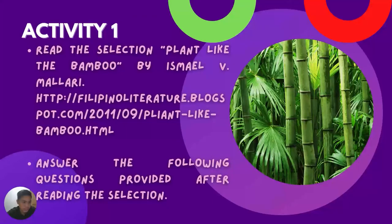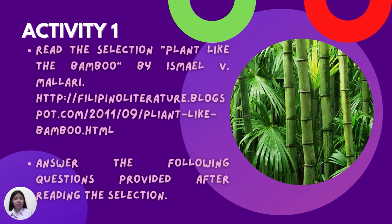Now, as we all know the different literary genres, their meanings, and some of their interesting facts, let's now proceed to our first activity for this session. Ms. May Angela Kakananta, my partner here, is waiting for all of us. Let's continue the same activeness and energy we have in this session. The task is to read the selection 'Plant Like the Bamboo' by Ismael Marari. There is a file given here, but I will also provide a narration for your class.